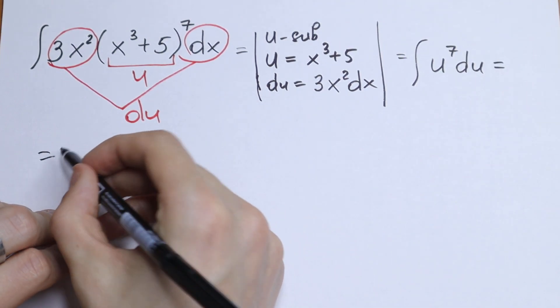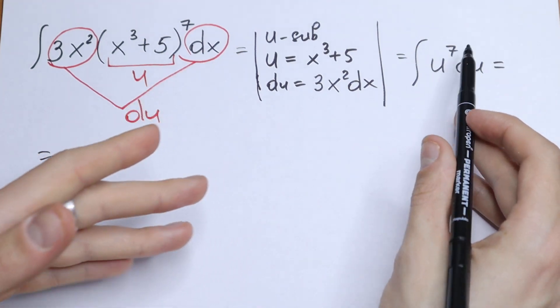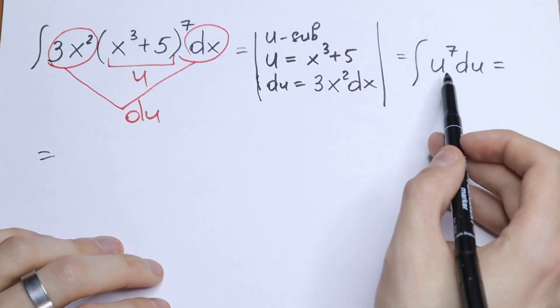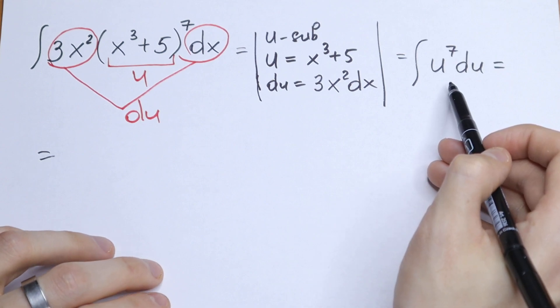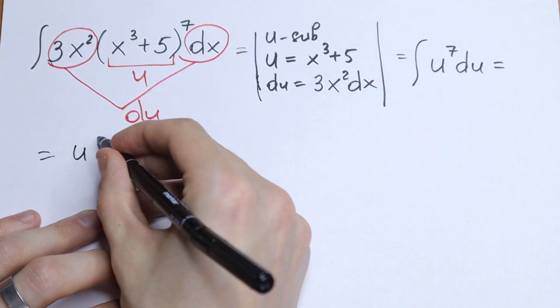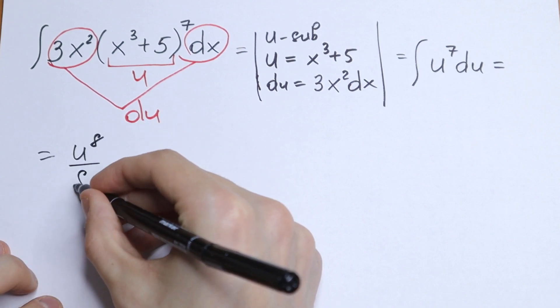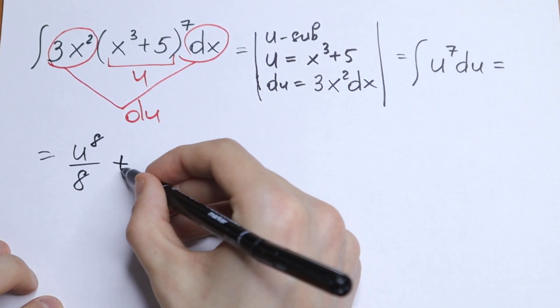And what we will have in the next... This is a classic case. This is like x to the 7th power dx. We need to add 1 and divide by this power. So we will have that this will be equal to u to the 8th power over 8 plus C.